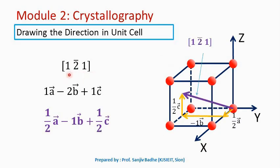Direction [1 2-bar 1]. This direction can be written as 1 a-bar minus 2 b-bar plus 1 c-bar. The 2 b-bar component will not fit in the unit cell, so to make this direction fit inside the unit cell, divide all the components by the maximum value — 2 in this case. The direction can now be written as 1/2 a-bar minus 1 b-bar plus 1/2 c-bar.